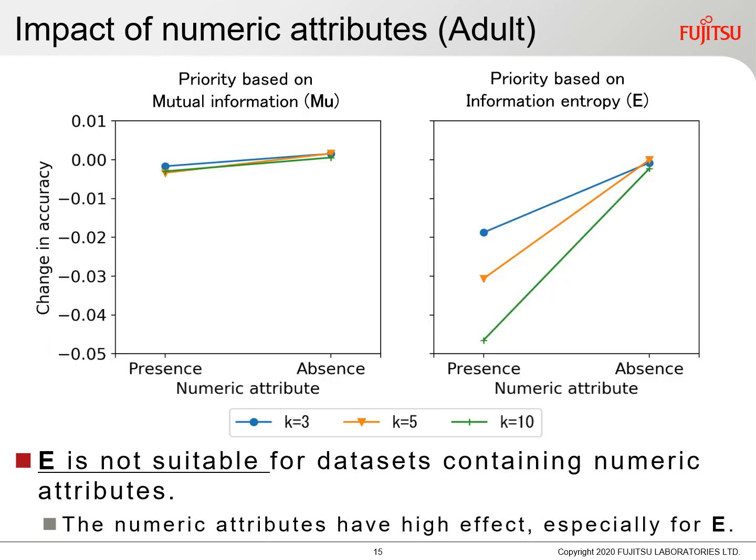First, we will look at change in accuracy due to the presence of numeric attributes using the adult dataset. The vertical axis shows accuracy and the horizontal axis shows the values of the anonymity parameter k. When the dataset has numeric attributes, the entropy method is significantly degraded. If the numeric attributes are removed, degradation of accuracy is low. This result shows that numeric attributes have a large effect, especially for the entropy method. It turns out that the entropy method is not suitable for datasets containing numeric attributes.